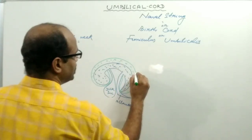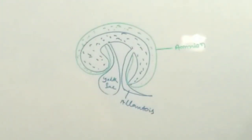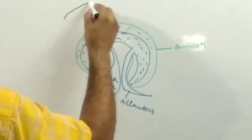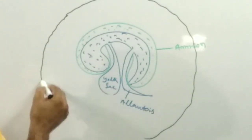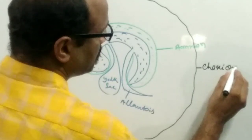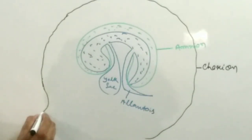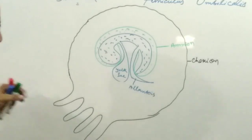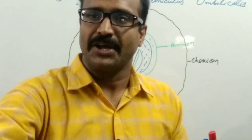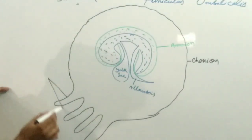The fluid present between the amnion and the fetus is known as the amniotic fluid. Outer to the amnion is the outer extra-embryonic membrane known as the chorion. Some part of the chorion sends out finger-like projections that enter into the endometrial wall of the uterus. These finger-like projections are known as chorionic villi.